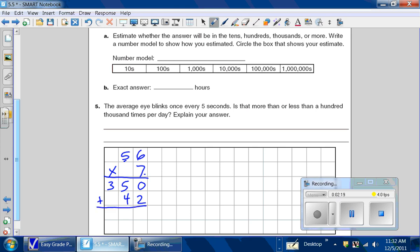They're lined up so I can just add them in the columns. 0 plus 2 is 2. 50 plus 40 is 90. Bring down the 300. And our answer is 392.